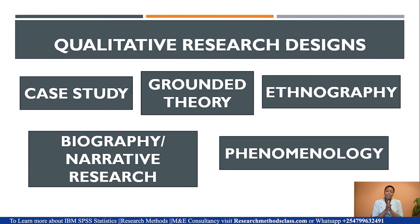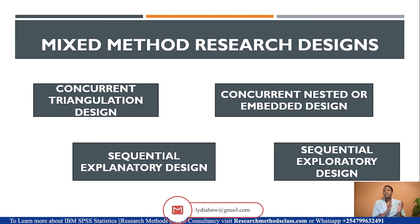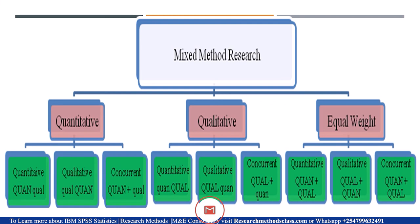We have five qualitative research designs: case study, grounded theory, ethnography, biography or narrative research, and phenomenology. For mixed method research, we have four main designs — or nine strategies depending on how you define mixed method or multi-method research. These include concurrent triangulation, concurrent nested or embedded design, sequential explanatory design, and sequential exploratory design, based on what you are prioritizing, whether they will be sequential or concurrent.